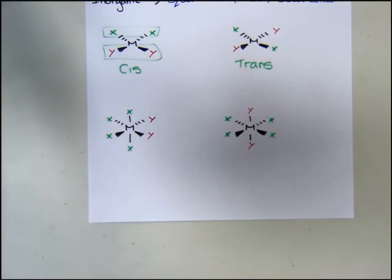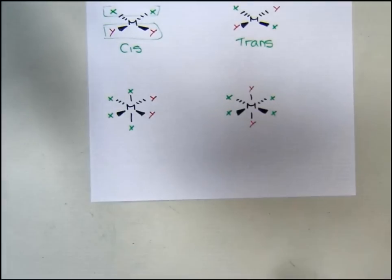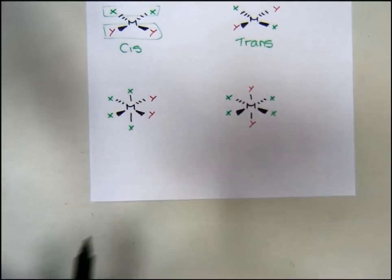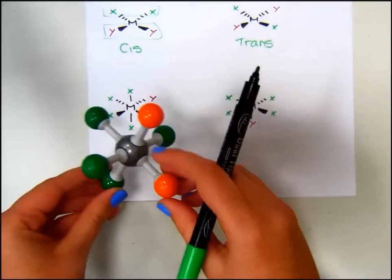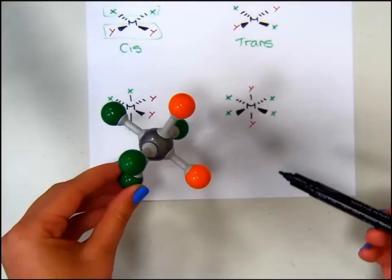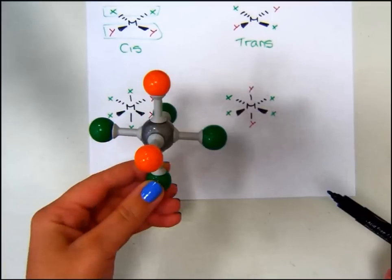Next, we can look at the octahedral complex, that has four X's substituents and two Y's. In the first one here, we can see, looking at the model, that the two Y's substituents are on the same face.